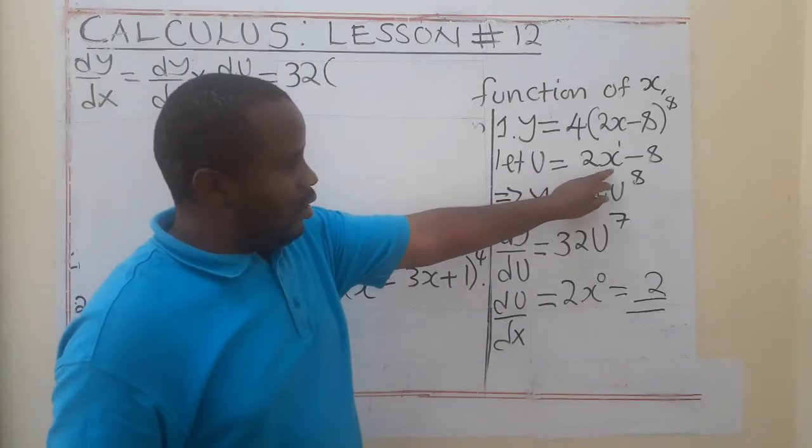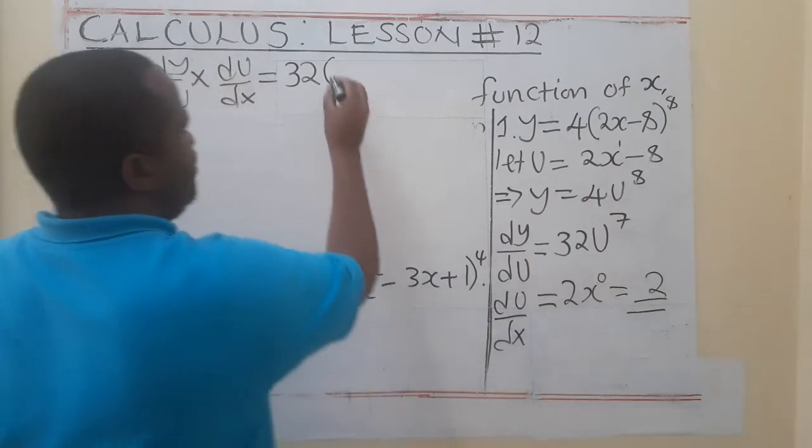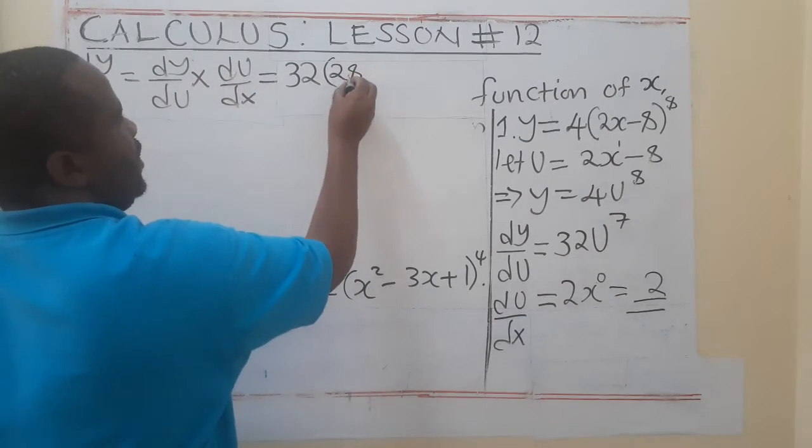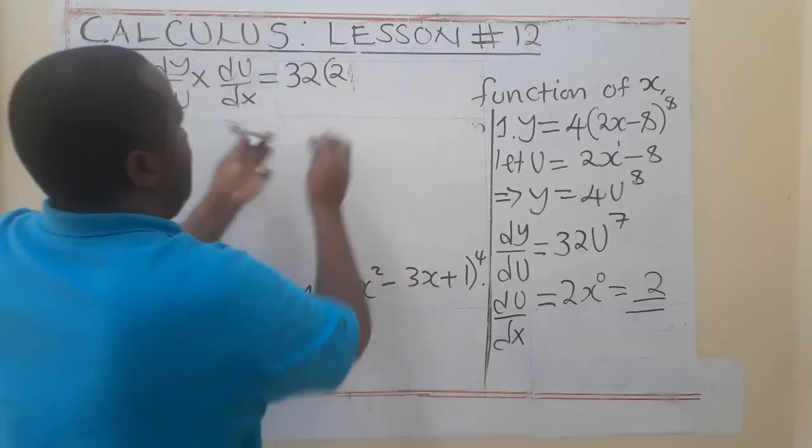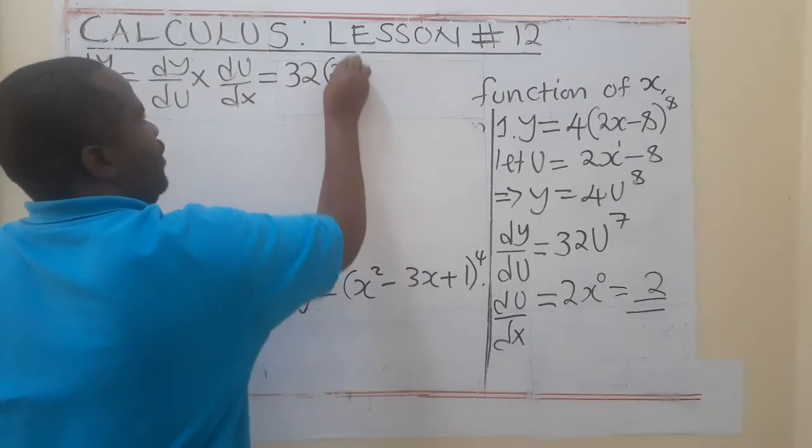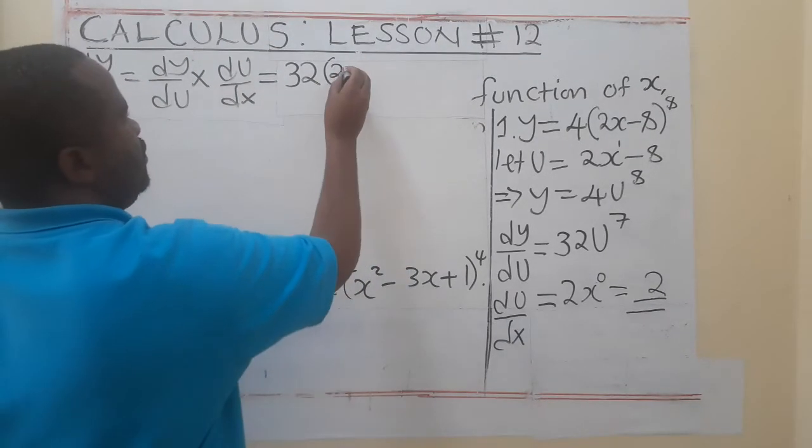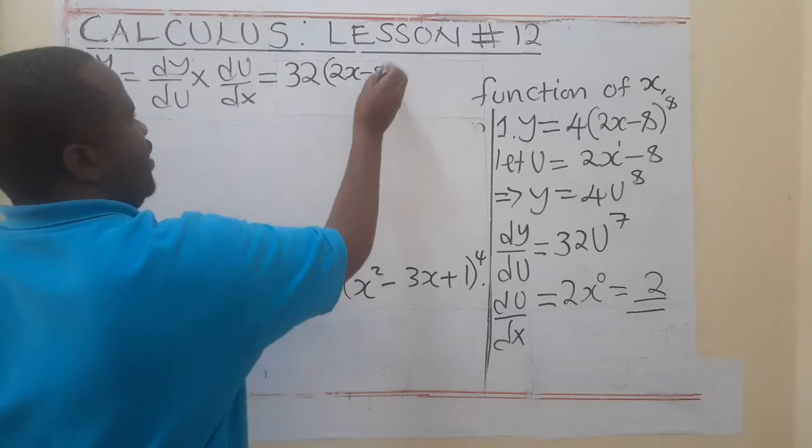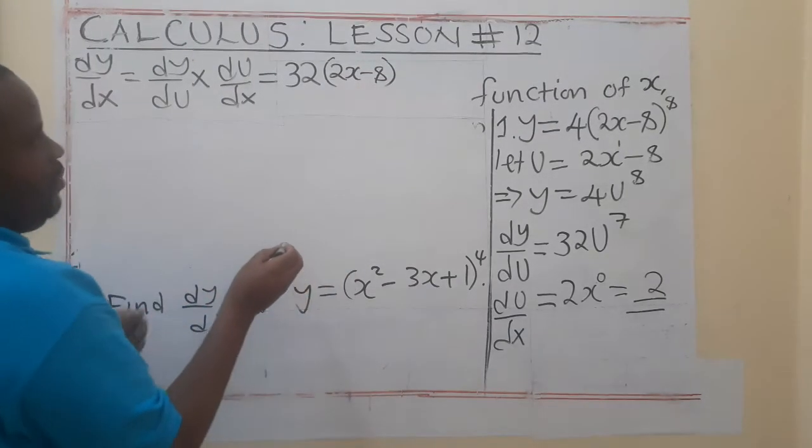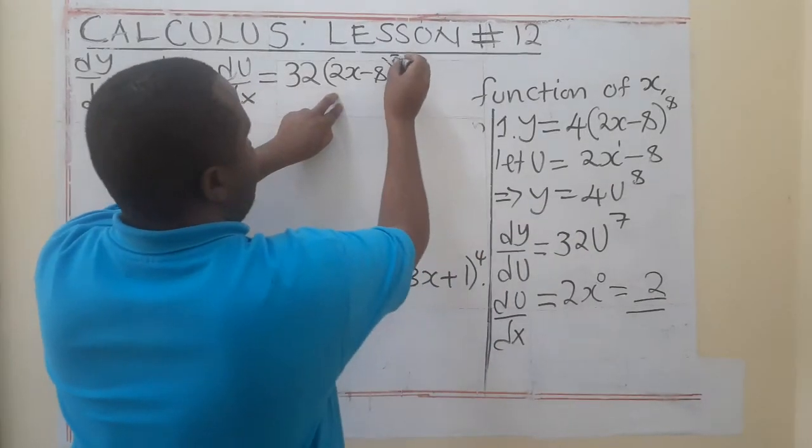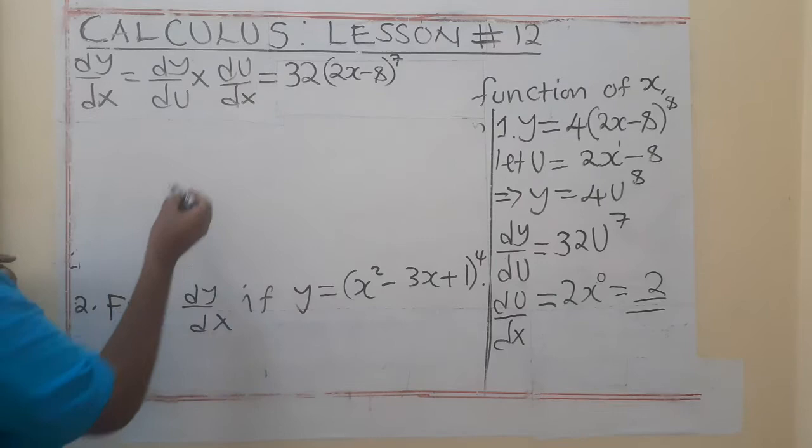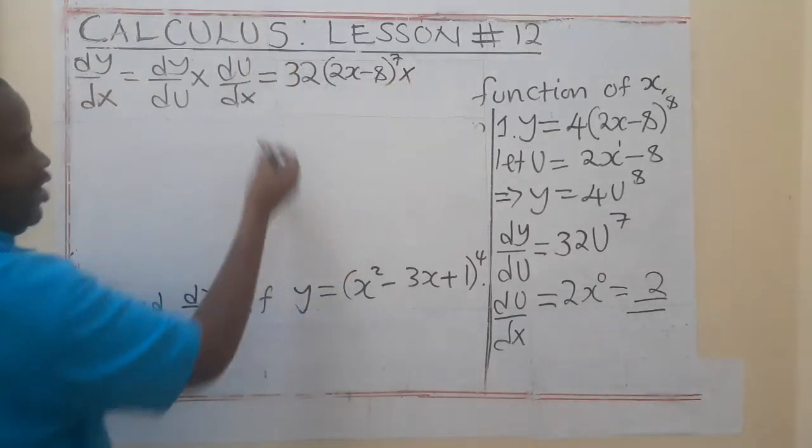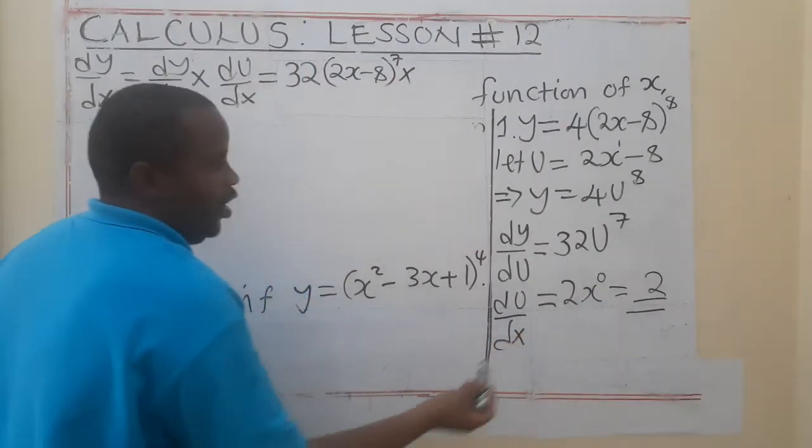So, I will just put here 2x minus 8. Oh, that is my u, isn't it? But this has power 7. So, the one that I'm looking at here is dy/du multiplied by du/dx. What is my du/dx? It's 2.